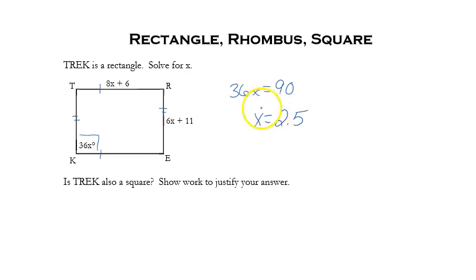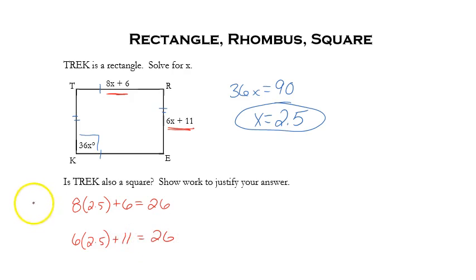Using this equation, we get x to be equal to 2.5. Now that I know that x is equal to 2.5, I can use that value and substitute it into these two expressions to find my side lengths. I can find that 8 times 2.5 plus 6 is equal to 26 and that 6 times 2.5 plus 11 is also equal to 26. So now that I know that TR is 26 and that RE is 26...